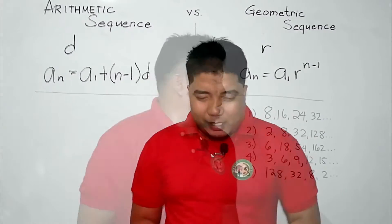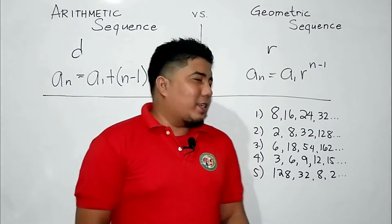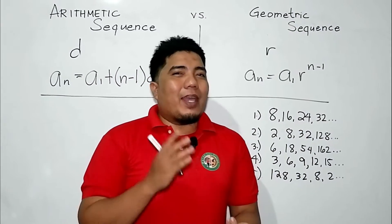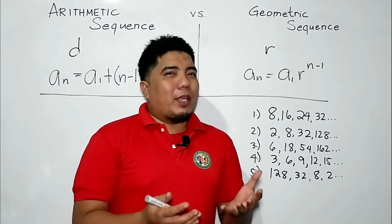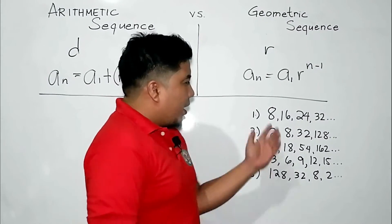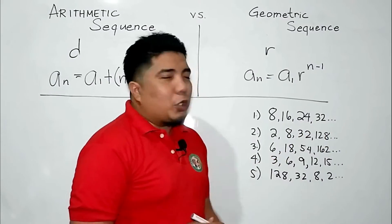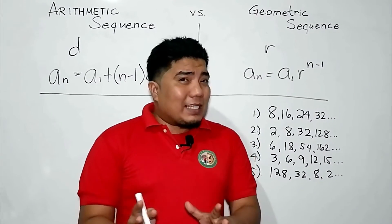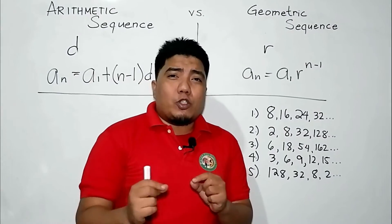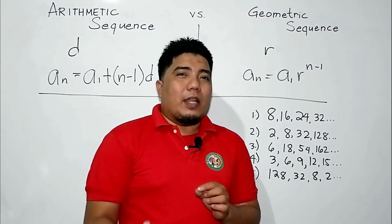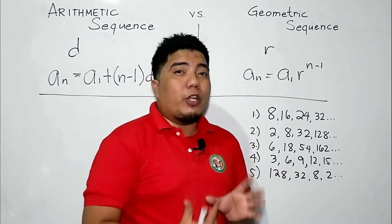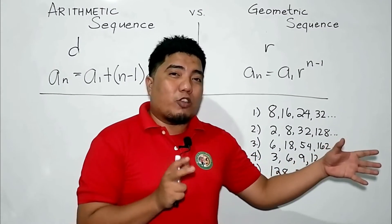Let's consider some examples. We have a series of sequences and we need to determine which are arithmetic and which are geometric. If it is arithmetic, we'll name the common difference; if geometric, we'll name the common ratio. Always try arithmetic first — check whether the differences between consecutive terms are common. If they are common, the sequence is arithmetic; if not, move to the next operation. Number one: 8, 16, 24, 32. The difference from 8 to 16 is 8, from 16 to 24 is still 8, and from 24 to 32 is still 8. Since we have a common difference, this sequence is arithmetic.